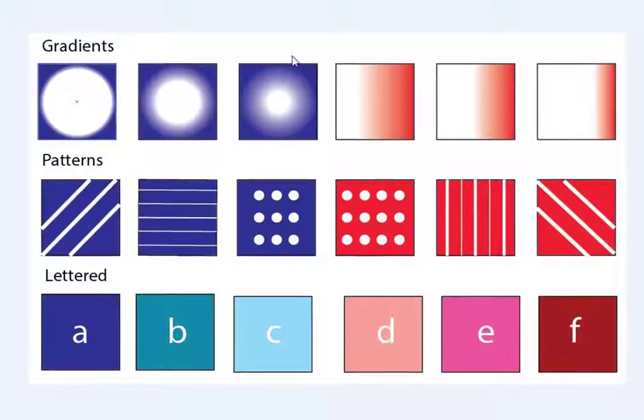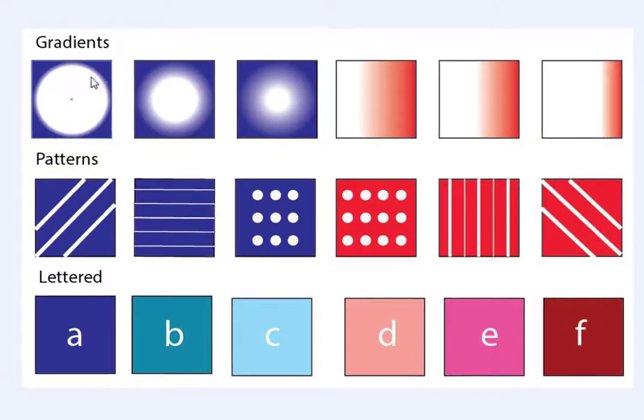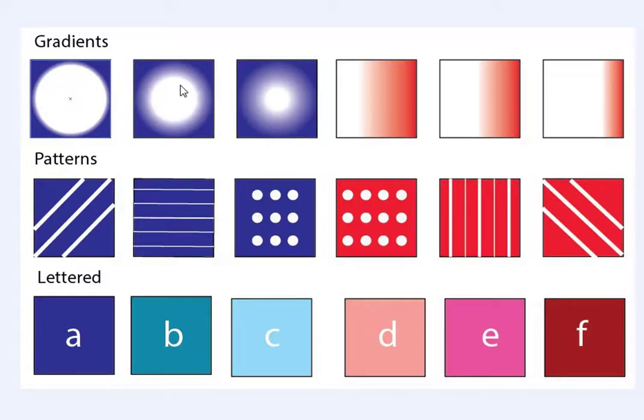The first set here is just changing the size of the gradients in the radial version or the linear version where the whiteness gets larger to show a change. You can also have thick lines at an angle or horizontally or vertically and thin lines, and you can use different dot numbers like this one has nine, this one has 12.